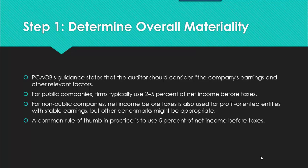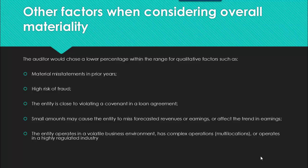In step one, determining the overall materiality, the PCAOB guidance states that the auditor should consider the company's earnings and other relevant factors. For public companies, firms typically use 2% to 5% of net income before taxes. For non-public companies, we use net income, or other variables that may be more appropriate, but a common rule of thumb is 5% of net income before taxes.